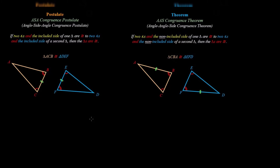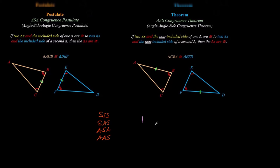To reiterate: it's side-side-side, side-angle-side, angle-side-angle, and angle-angle-side. Next time we'll learn about special cases such as right triangles, specifically the hypotenuse-leg theorem, which is just a special case of one of these applied to right triangles. Those are all the ways we prove triangles to be congruent — that's the gist of the majority of this chapter. Now we shall proceed with some examples.